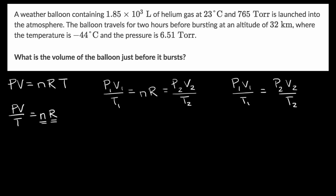Well, let's first think about P one. So pressure at time one is what? It's 765 torr, 765 torr, and what's P two? That's the pressure just before it burst. And they tell us it's 6.51 torr, much lower pressure, which makes intuitive sense. We're at a higher altitude, 6.51 torr.